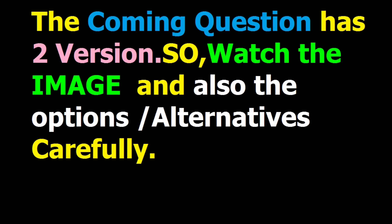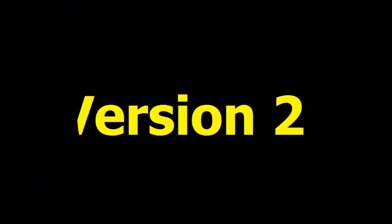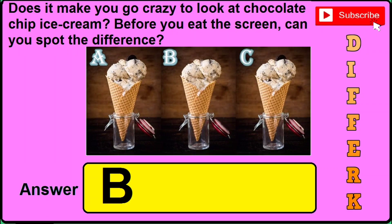This coming question has two different box-on-our-type versions, so you need to watch the image and the options very carefully. In version 1, if you find this sort of image, the correct answer will be C — just click C in the answer box. In version 2, if you find this sort of image, the correct answer will be B — just click B in the answer box.